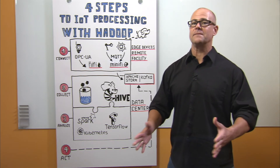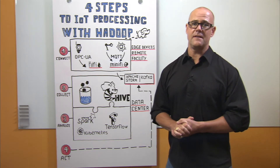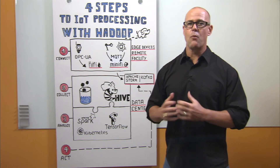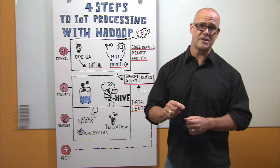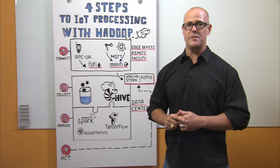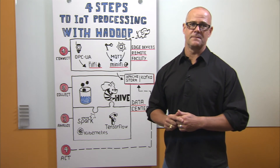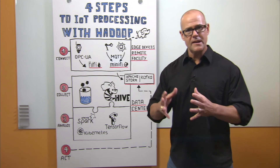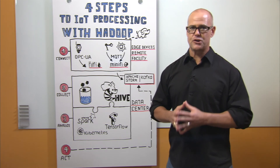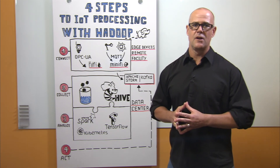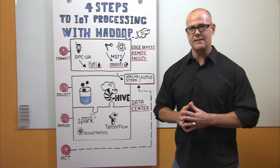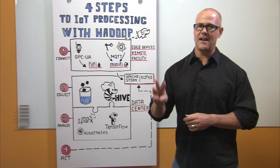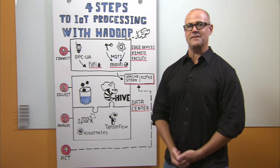There you have it. Full circle IoT in four steps. The more data you collect, the more insight it can provide, so your models get better and help you make smarter business decisions. Obviously, there are complexities to each of these steps, but by breaking it down, you're sure to succeed one step at a time. So the next time you think of IoT, just remember: connect, collect, analyze, act. Thanks for watching.